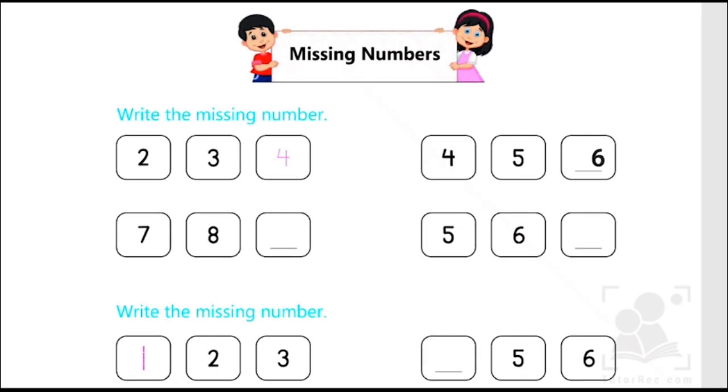Let's move forward. In the next row we have been given two numbers. 7, 8, and we have to find out what comes after 8. So let's start counting with me.